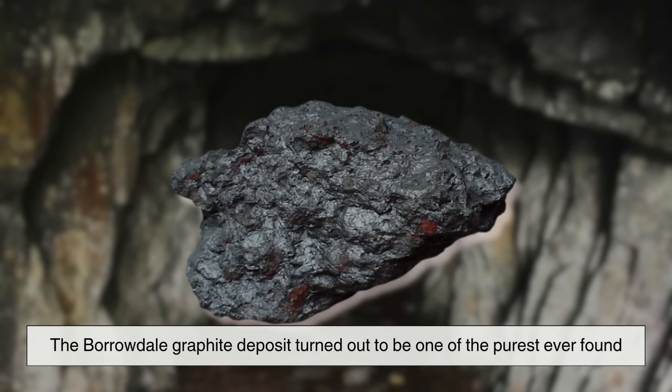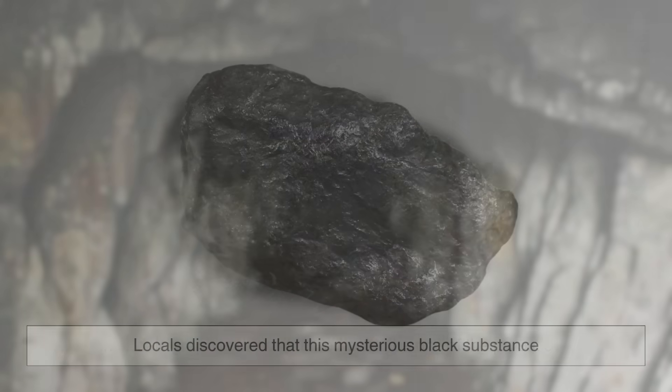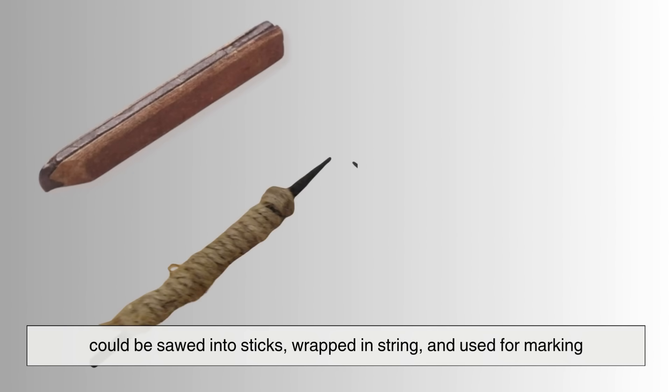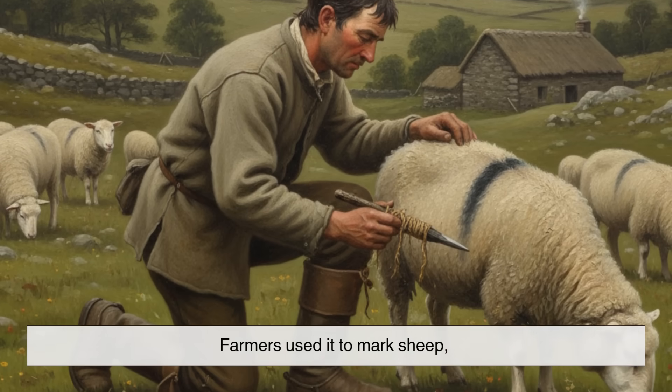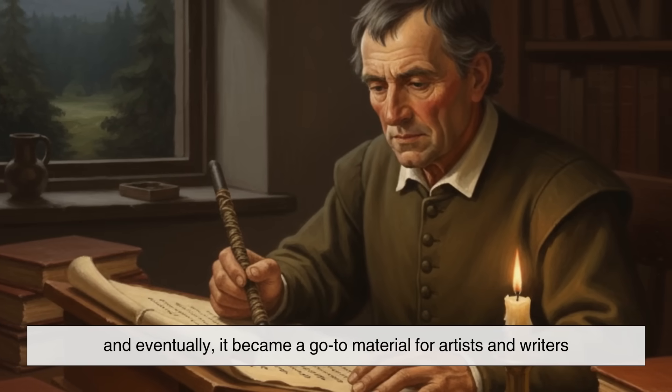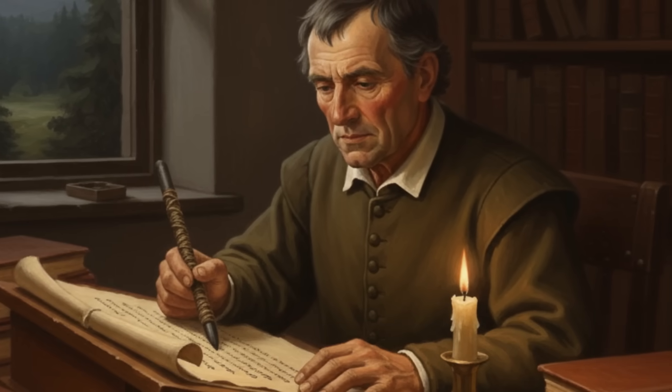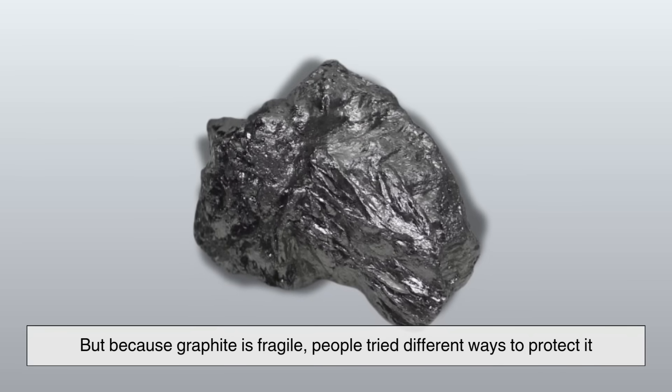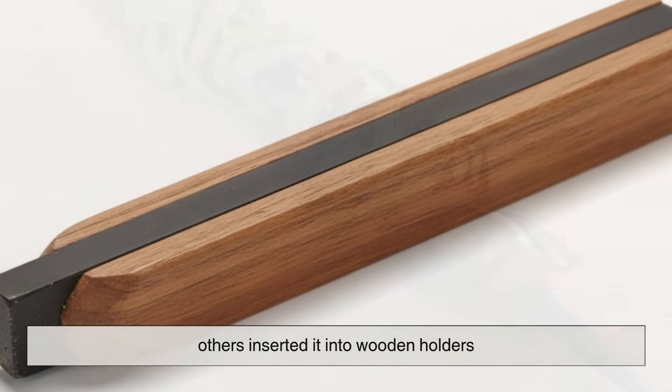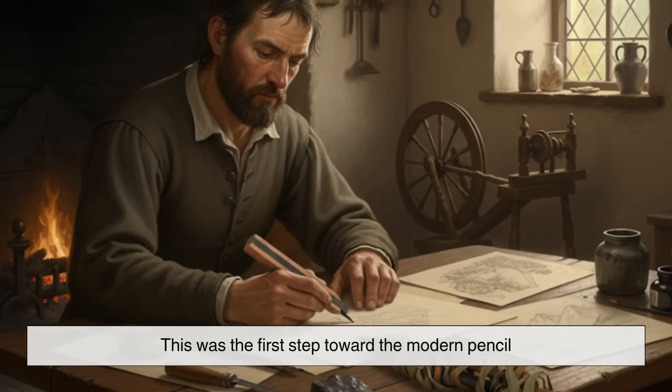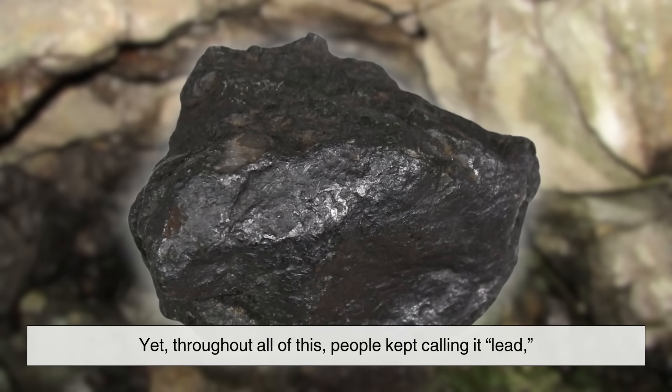The Borrowdale graphite deposit turned out to be one of the purest ever found. Locals discovered that this mysterious black substance could be sawed into sticks, wrapped in string, and used for marking. Farmers used it to mark sheep, craftsmen sketched with it, and eventually it became a go-to material for artists and writers. But because graphite is fragile, people tried different ways to protect it. Some wrapped it in string, others inserted it into wooden holders. This was the first step toward the modern pencil, yet throughout all of this, people kept calling it lead, not knowing that chemically it was carbon.